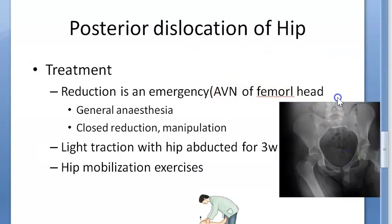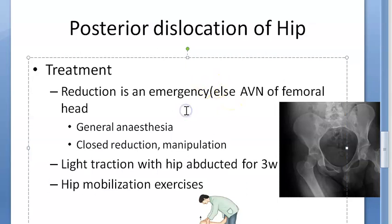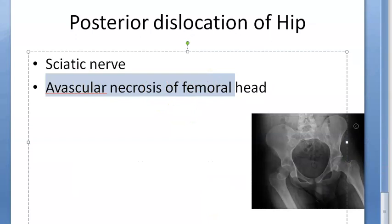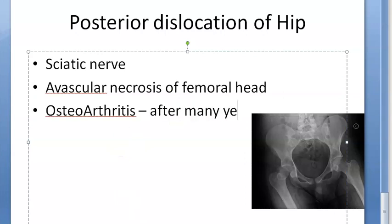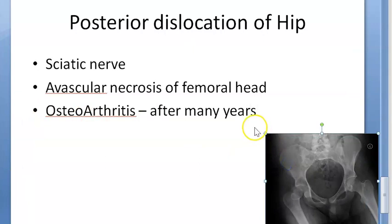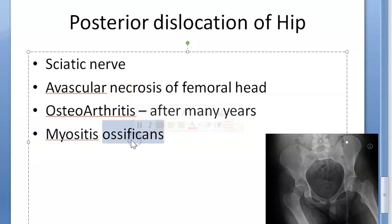Avascular necrosis of the femoral head is the reason reduction must be done urgently — to put it back in position before necrosis sets in. Another complication is osteoarthritis, which is a late complication occurring after many years. This can happen because of an avascular deformed femoral head or an incongruous acetabulum or femoral head — meaning the joint surfaces are no longer in harmony.